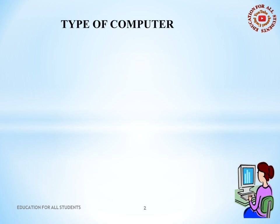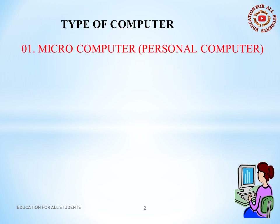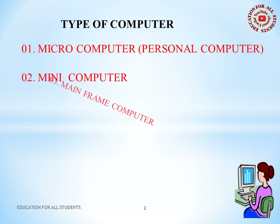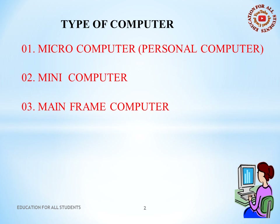We're going to lecture here on four types of computers. Number one is microcomputer, personal computer. Number two is minicomputer. Number three is mainframe computer. Number four is supercomputer.